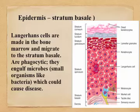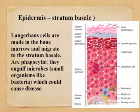Langerhans cells — they were named after a person. They are made in the bone marrow, and then they travel through the blood and migrate, squeezing between the other epidermal cells. These cells are phagocytic, so if you were to get some virus, bacteria, or other microbes into your skin, the Langerhans cells try to engulf the microbe through phagocytosis — so they're protective as well.